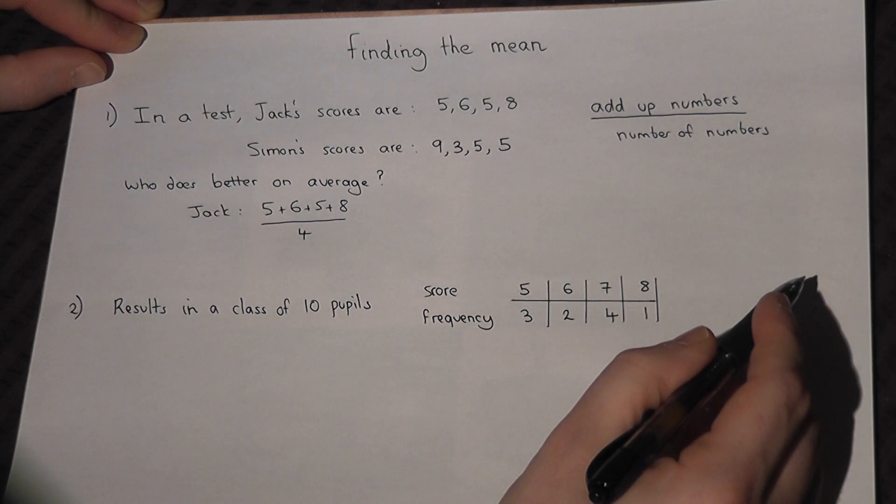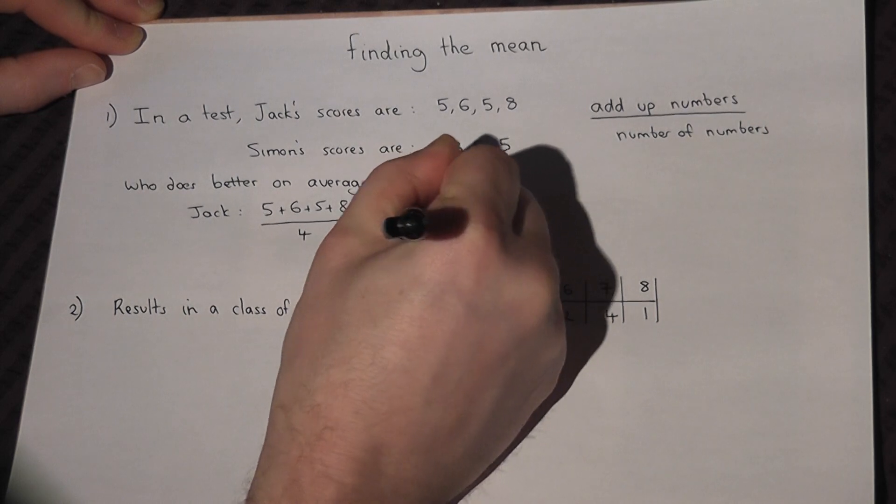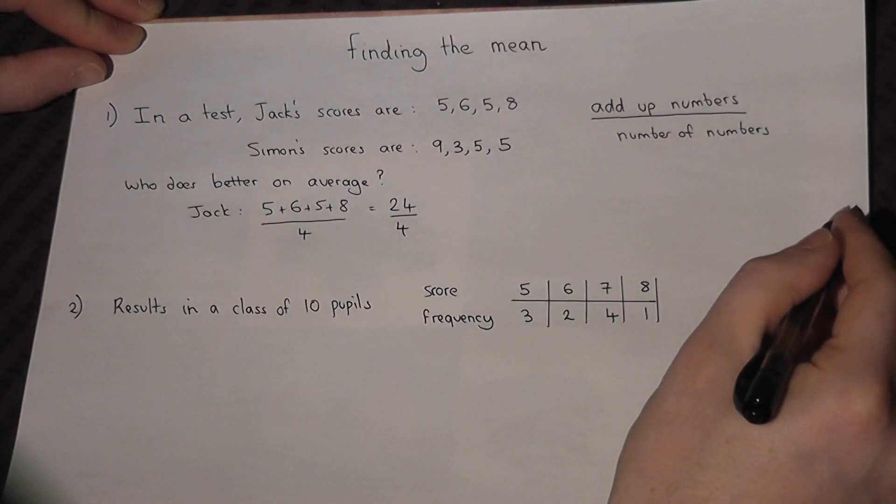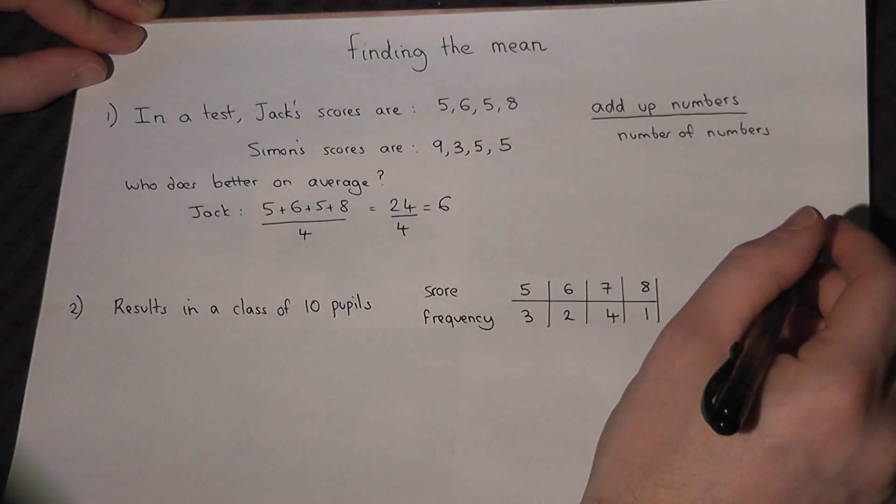So 5 plus 6 is 11, 16, 24, 24 divided by 4, which is 6. So Jack's average or mean is 6.